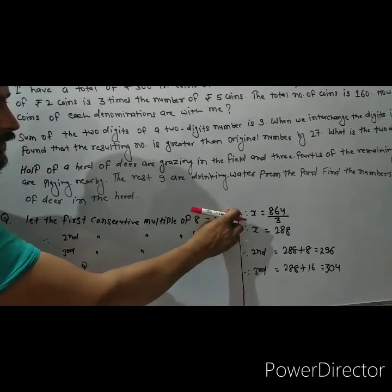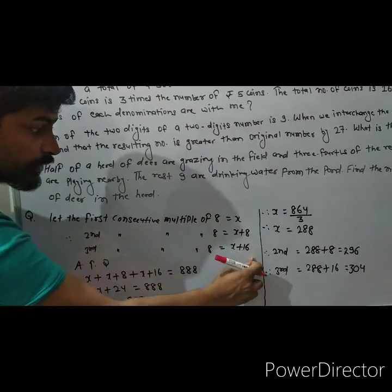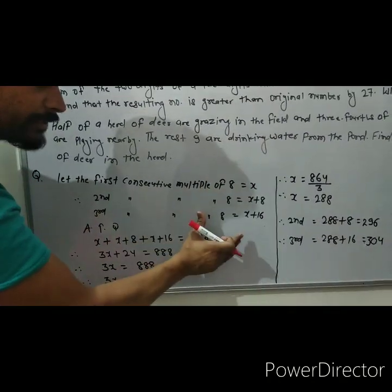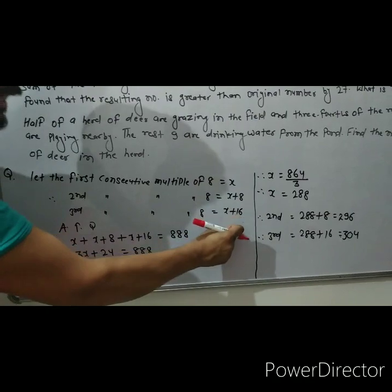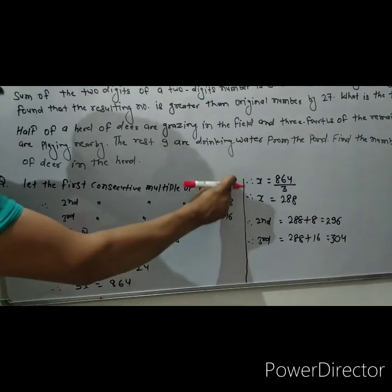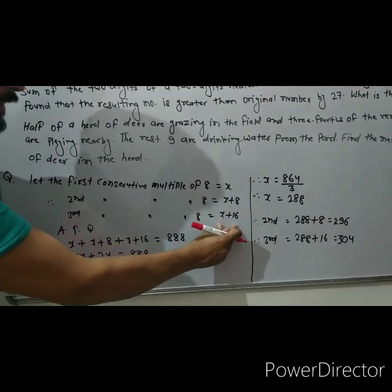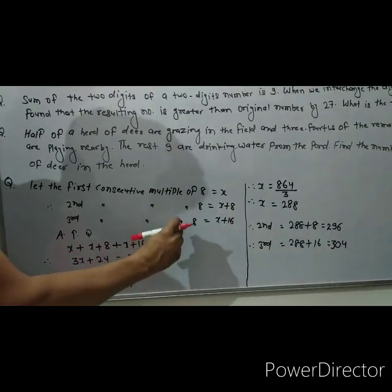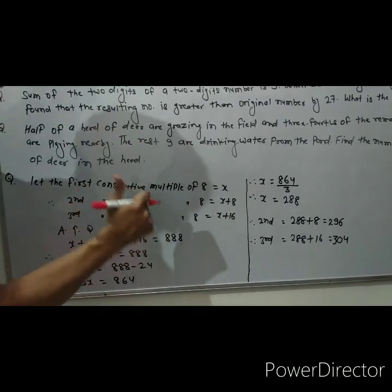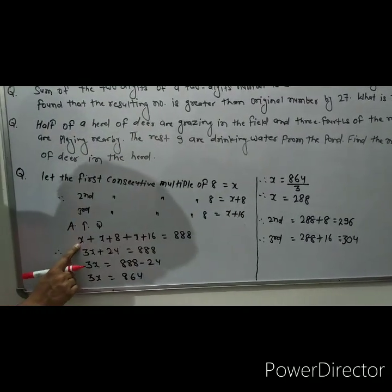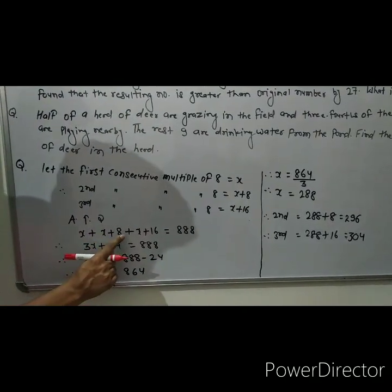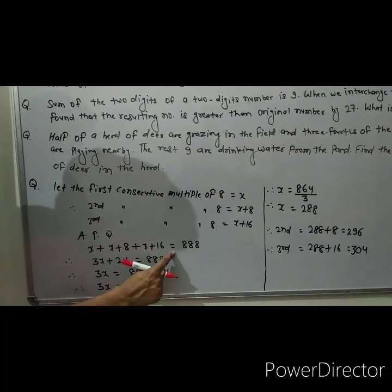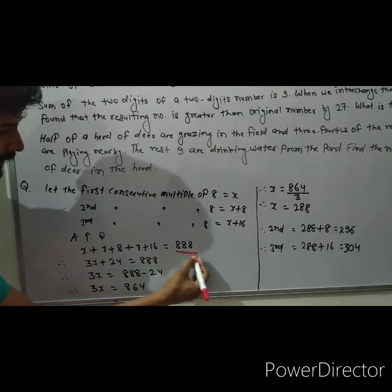These are the three consecutive multiples of 8. Now according to the question, when we add all 3 consecutive multiples of 8, we will get 888. So according to the question we can write: x plus (x + 8) plus (x + 16) is equal to 888.